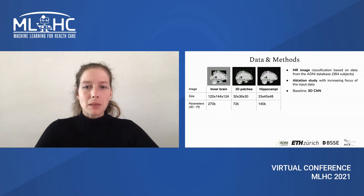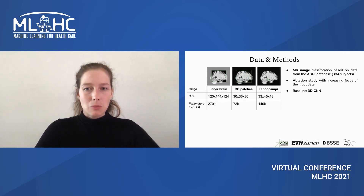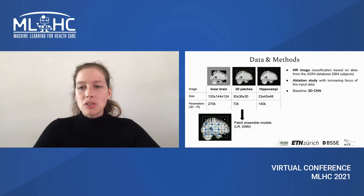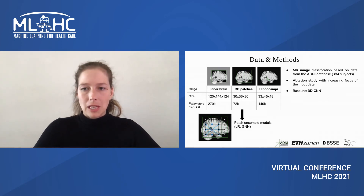We started from the inner brain, which comprised a large intensity cube and hence posed restrictions on the hardware we used to train models. We then moved to geometric three-dimensional image patches and finally functional brain subunits, the hippocampus. We used three-dimensional neural networks to train these models and also looked at ensembles where we combined multiple image patches through either logistic regression or graph neural networks.